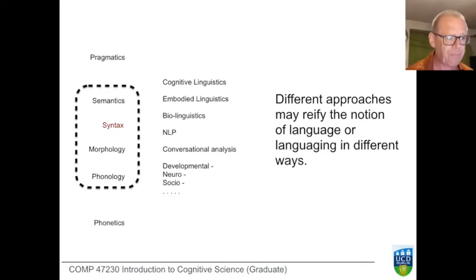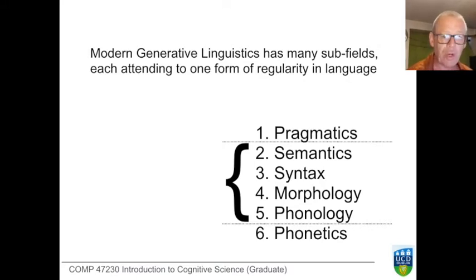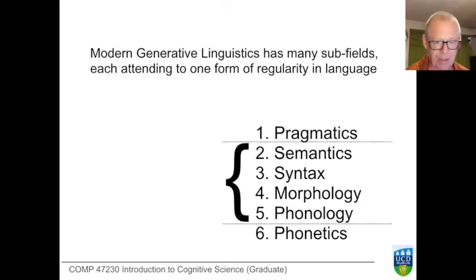Here's that stack with the four in the middle that belong to generative linguistics: semantics, syntax, morphology, and phonology. We're going to do a whistle-stop tour of these. We don't have time to do justice to any of these fields, but you should know what the principal concerns of each field are and how they are distinguished from one another. We're going to begin with pragmatics and end with phonetics.